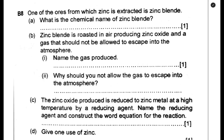So let us answer the first question here. One of the ores from which zinc is extracted is zinc blende. What is the chemical name of zinc blende? Sometimes you might find: what is the chemical name for the principal ore of zinc? So the chemical name for this one is zinc sulfide. And if a question asks for the chemical formula, it is ZnS — that is the chemical formula for zinc blende.